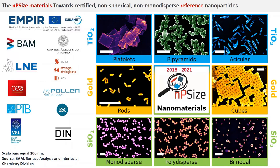The reference nanoparticles include spherical and non-spherical, monodispersed or controlled polydispersed particles, with different shapes — rods, cube platelets, bipyramids — and different material types including titania and silica.